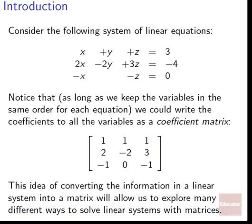Consider the following system of linear equations: x plus y plus z equals 3, 2x minus 2y plus 3z equals negative 4, and negative x minus z equals 0. Notice that as long as we keep the variables in the same order for each equation — x, y, z every time — we could write these coefficients to all the variables as a coefficient matrix. So we've got in front of x is just a 1, in front of y is just a 1, in front of z is just a 1, so we can write a first row of 1, 1, 1.